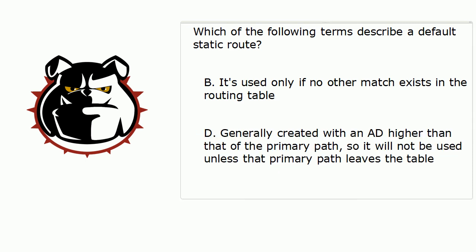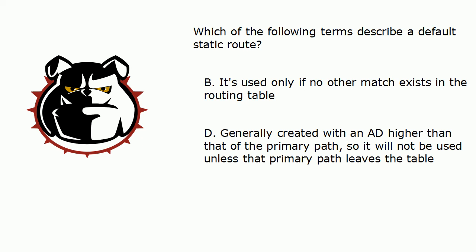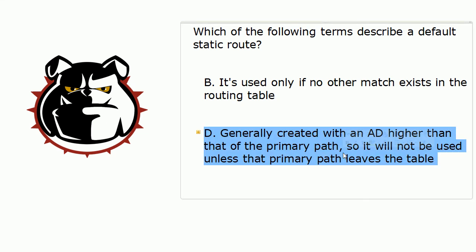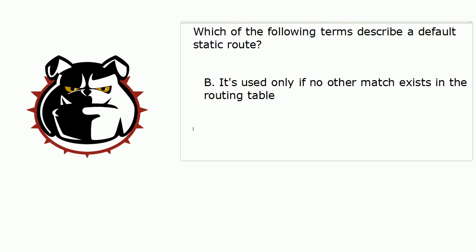D does describe a kind of static route, and this is the kind of thing you want to watch on the exam — don't go through the questions too quickly. D describes a floating static route. On YouTube, I've got one shorter video about three minutes long, and a three-part series with about 20 minutes of free training on floating static routes. So if you're fuzzy on what those are, check out my YouTube channel. Right then and there, we come down to B as the only correct answer — it's used only if no match exists in the routing table.